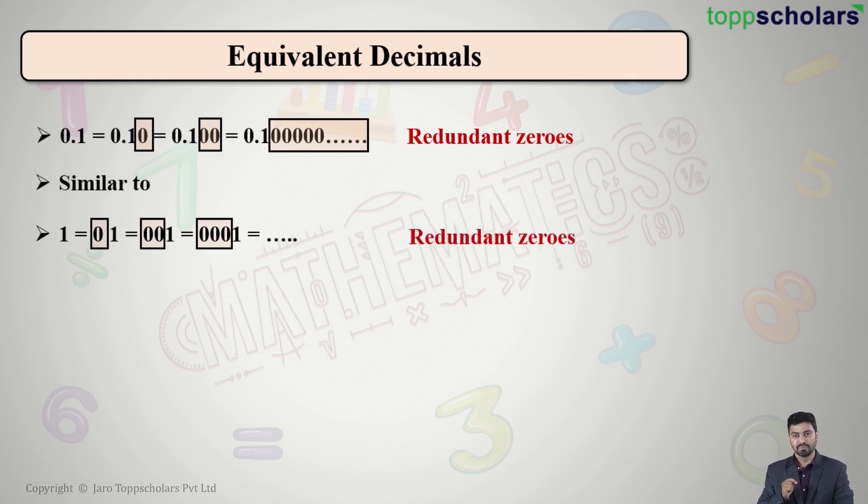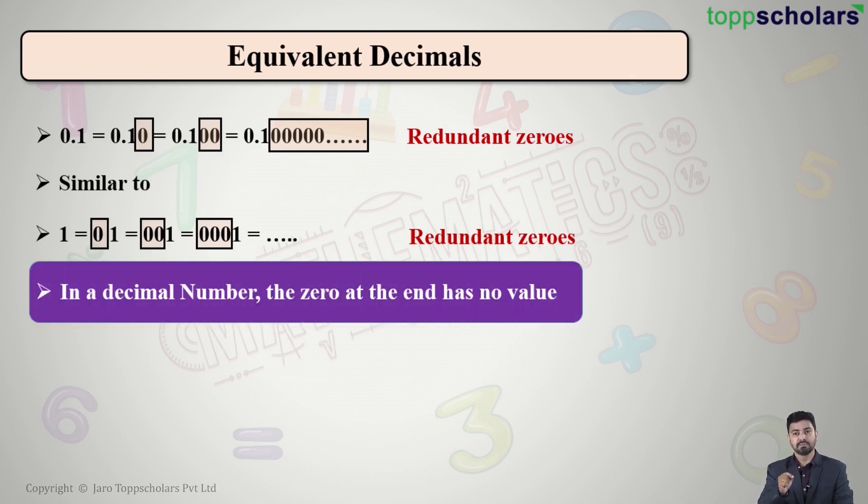Hence, these zeros are known as redundant zeros. So what we have understood from this is that in a decimal number, the 0 at the end has no value. So I can say that if I write 0.1200, how many zeros are at the end? Two zeros. So they can be ignored, they are redundant zeros, and hence the actual value will be simply 0.12.